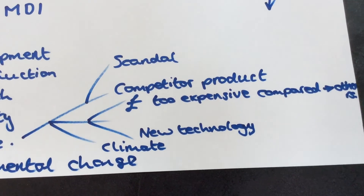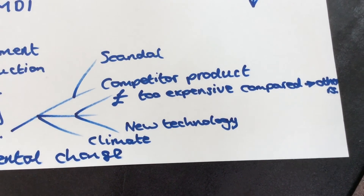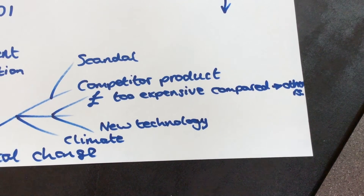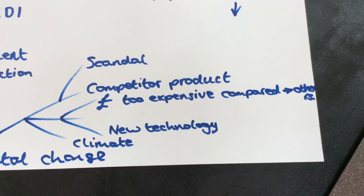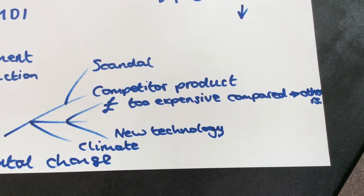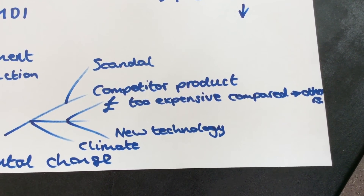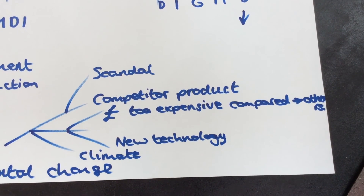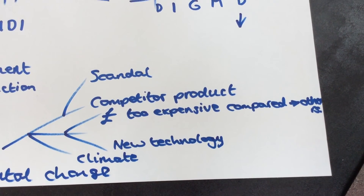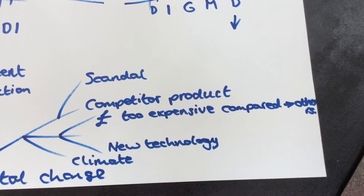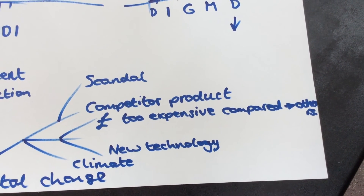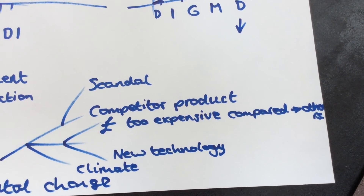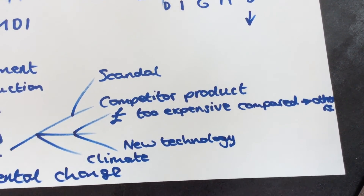Another thing that might cause decline is new technology. New technology might come along which means your product is no longer competitive. Or maybe there's just a change in the climate — for example, if you are selling umbrellas, you're not going to sell many during the summer.